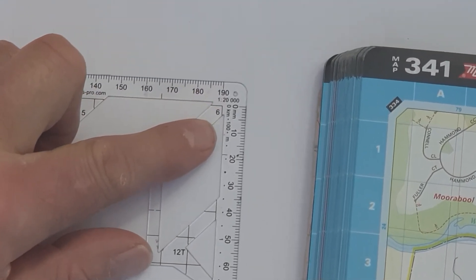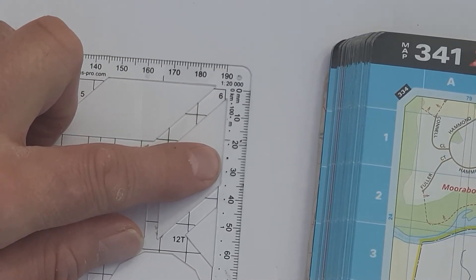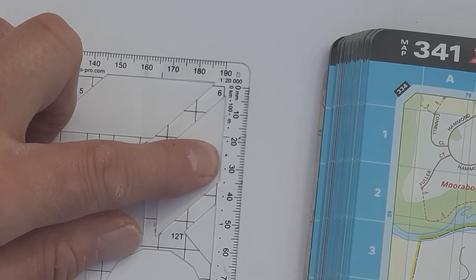You can see here there are dots, and those dots are 100 meters apart. A bolder dot indicates half a kilometer.